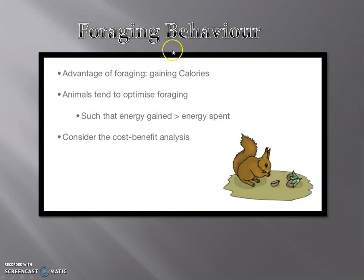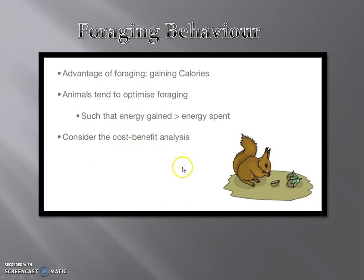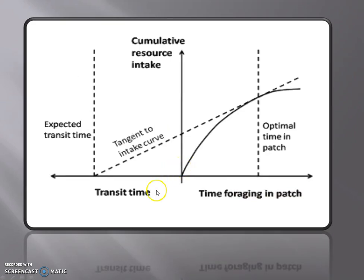The key points related to foraging behavior: the main advantage of foraging is gaining calories. Animals tend to optimize foraging such that the energy gain for a particular foraging event must be more than the energy spent. The amount of energy the predator invests in pursuing prey must be less than the energy gained. Energy gain should always be more than energy spent — this is the cost-benefit analysis.